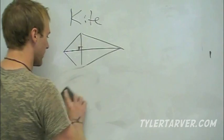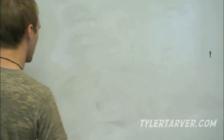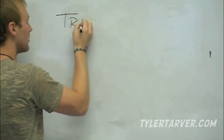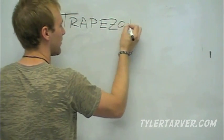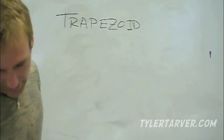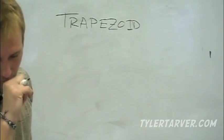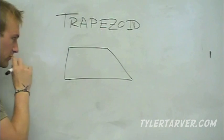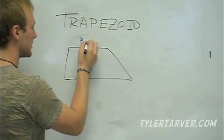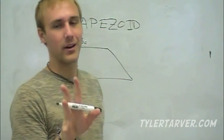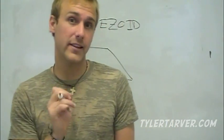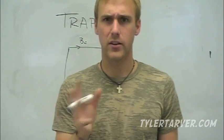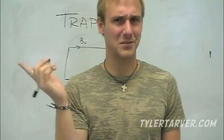Alright, trapezoid. I'm guessing most of you have heard this word, even though you probably can't articulate the exact definition. Now, a trapezoid is not a parallelogram, and neither is a kite — they are not special parallelograms.